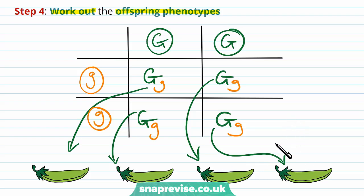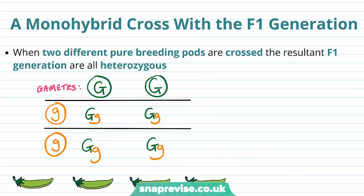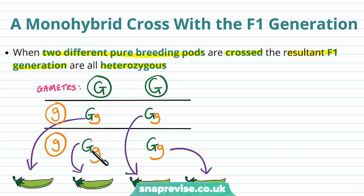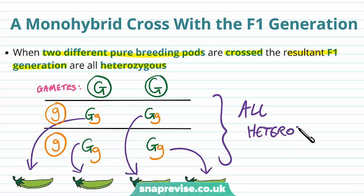We can then look at the next generation after the first. When two different pure-breeding pods are crossed, the resultant F1 or first filial generation are all heterozygous. Every single offspring member is going to have big G, little g. Remember, heterozygous means the two alleles are of different forms within that particular organism.